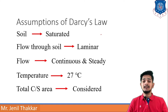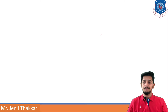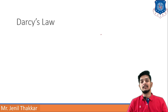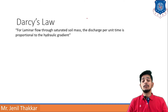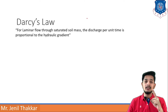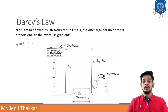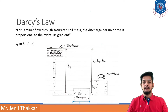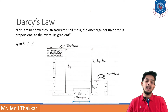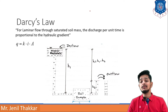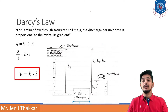Temperature is assumed as 27 degrees Celsius and total cross-sectional area is considered. These are the assumptions for Darcy's Law. For laminar flow through saturated soil mass, the discharge per unit time is always proportional to the hydraulic gradient, meaning q is proportional to i. He gave the equation: q = k × i × A.